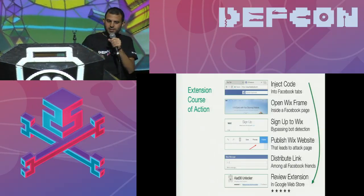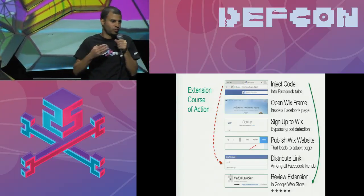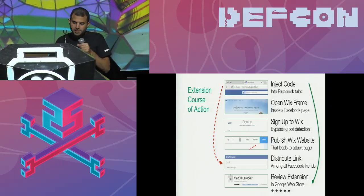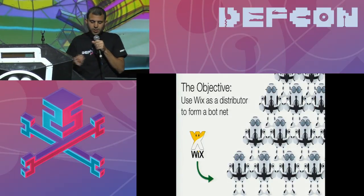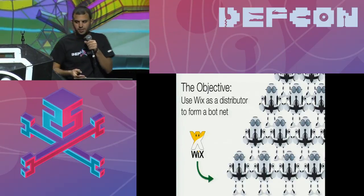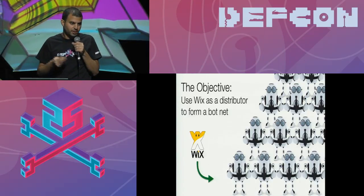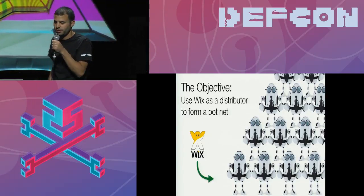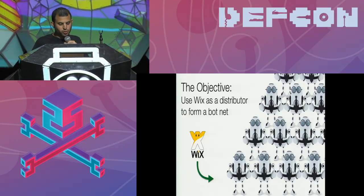My next question is: why would this attacker even need Wix? Why wouldn't he just inject code into Facebook and use Facebook Messenger to distribute the URL of his attack page? The answer is that Wix was used to distribute a bot — Wix was actually a supplier of disposable URLs. Every victim that is infected creates a new website, a new attack URL that leads to Wix, making it much harder for Facebook to detect this attack because all the URLs were different. There wasn't a common popular malicious URL in these requests.